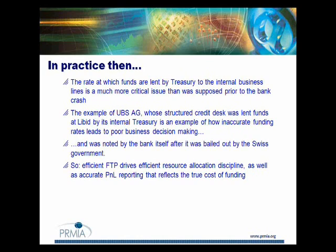What's happened is - and I've quoted UBS specifically because that's in the public domain - there was a report published by the OECD which highlighted aspects of the UBS shareholder report that talks about how its internal funding regime worked. Their structured credit business funded itself at sub-LIBOR. Like any large money center bank, UBS was able to fund itself at LIBOR flat or sub-LIBOR, which of course every business line in the bank then benefited from.